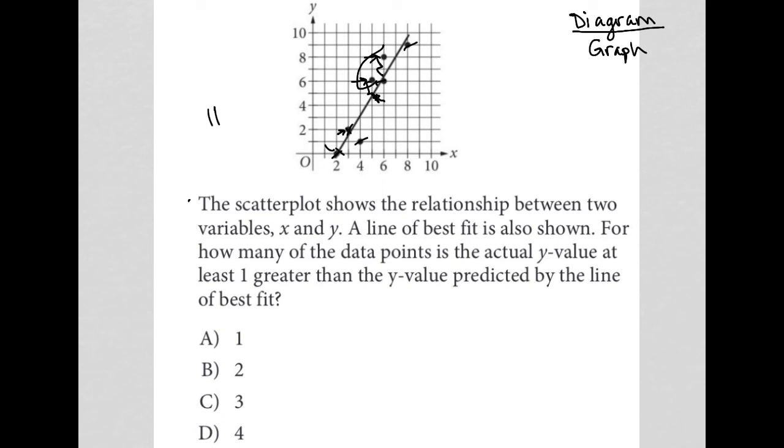So, only two of these points would fit the criteria. Two of these points are at least one unit above the predicted point on the line of best fit. So, our answer here is choice B.